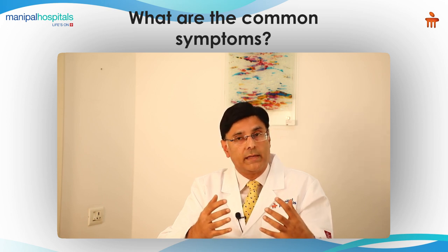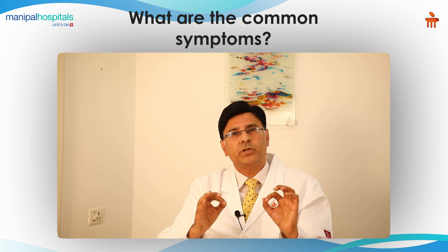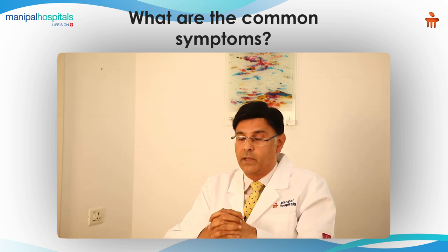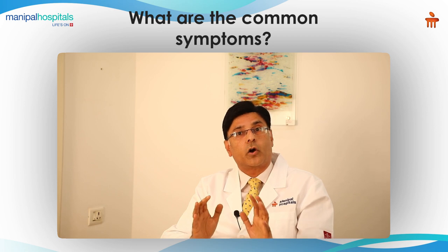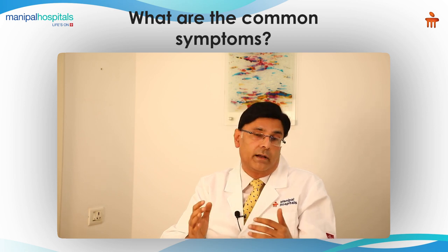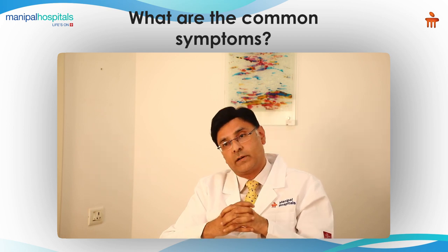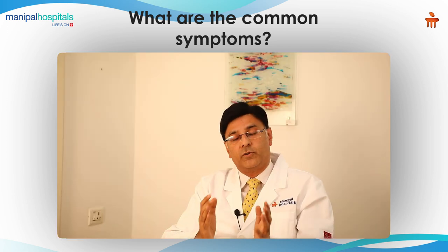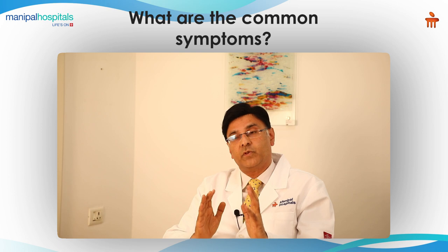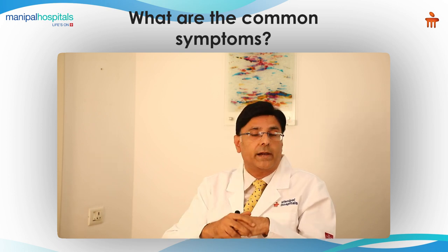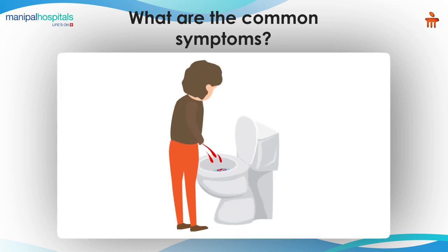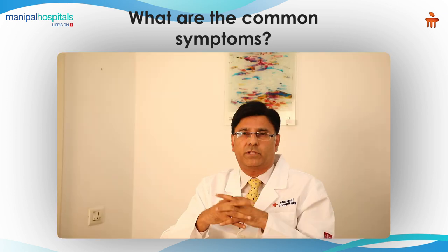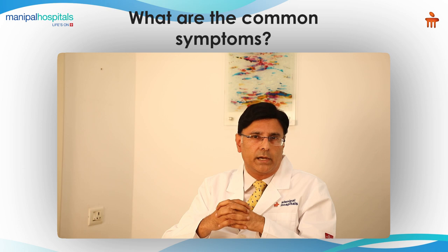The pain is described as a deep stabbing pain that comes intermittently — in other words, a colicky labor pain. Even a lady who has delivered a baby through normal delivery will say this colic is more severe than labor pain. That is the severity of the pain experienced during ureteric colic. In advanced cases, there can be blood in the urine, urinary tract infection, and severe persistent pain.